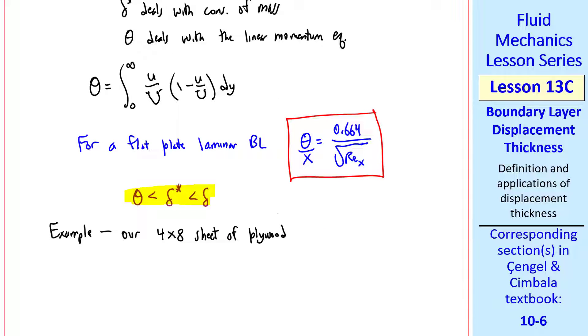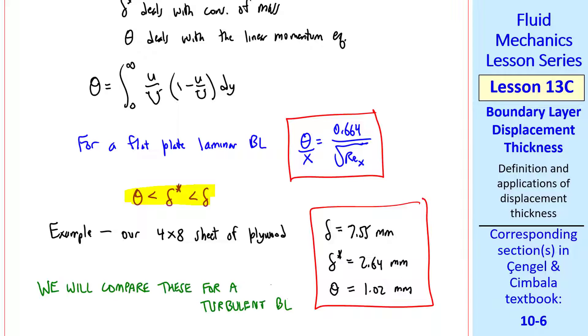For example, for our 4x8 sheet of plywood, delta was 7.55 millimeters, delta star was 2.64 millimeters, and theta is only 1.02 millimeters. I won't do any examples with theta, but you can look at the textbook for examples of how theta is used in some problems. In a future lesson, we'll compare these same values for a turbulent boundary layer at the same Reynolds number.